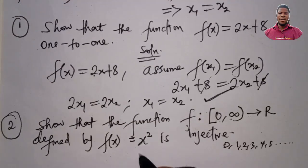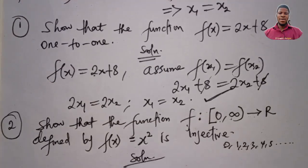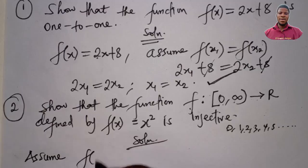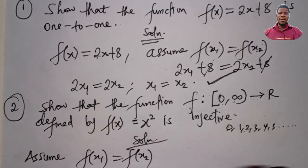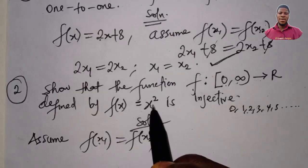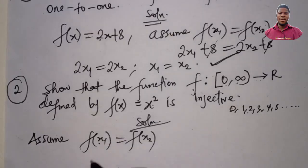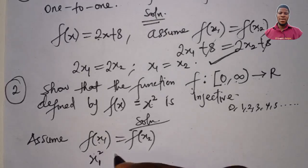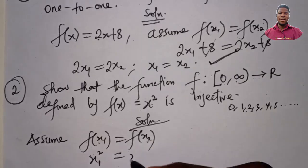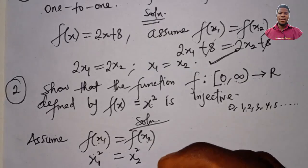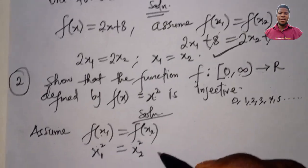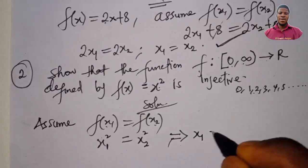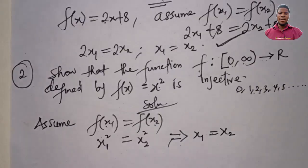We assume f(x1) = f(x2). From the function, f(x1) = x1² and f(x2) = x2². Taking the square root of both sides implies x1 = x2. This condition is satisfied, so the function is injective over the non-negative integers.